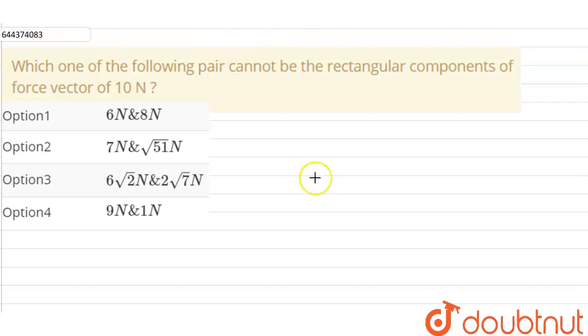First of all, let us know what is the rectangular component of a vector. So let us suppose we have been given a vector v. If the component of the given vector are perpendicular to each other, then they are called the rectangular components.